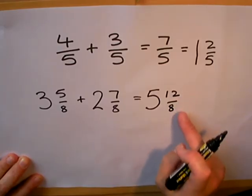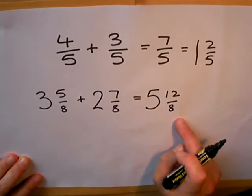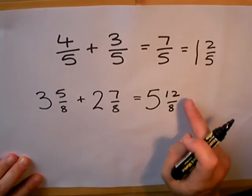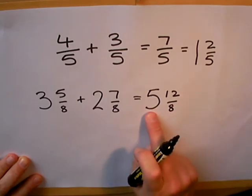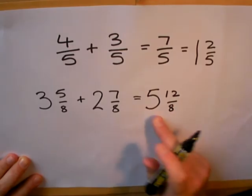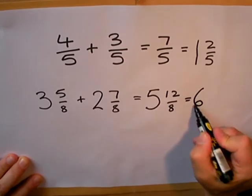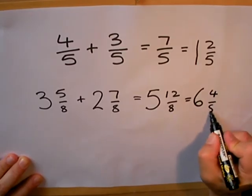Again we have a top-heavy fraction here, so we have enough to make another whole one. We need eight eighths to make a whole one, so use up eight of these eighths to make a whole one and add it to the five whole ones we already have. That will give us six whole ones and four eighths left over.